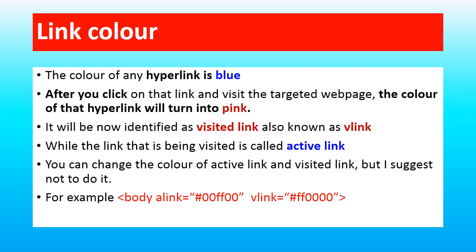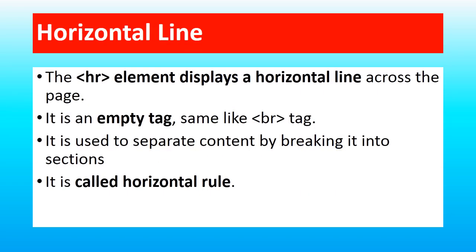I prefer never to touch the alink and vlink attributes — they should be left as default. The next tag we can use inside the body is the HR tag. HR tag is used to insert a horizontal line wherever we want to give that type of formatting — for example, to separate sections by inserting a horizontal line between two paragraphs.